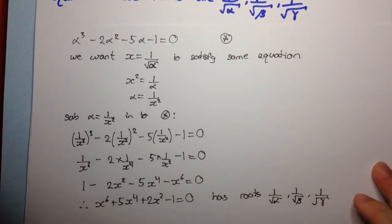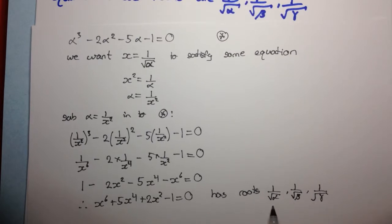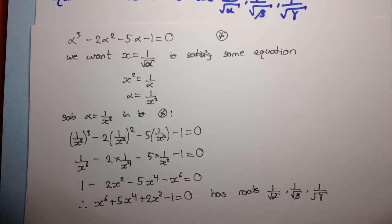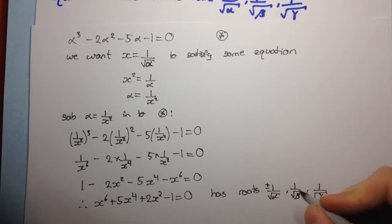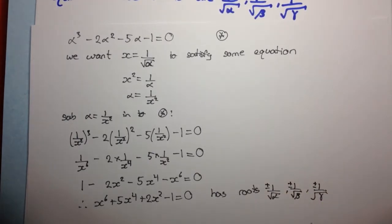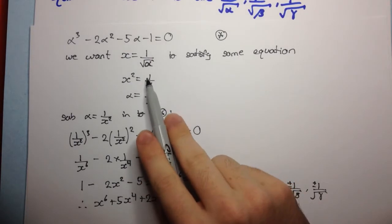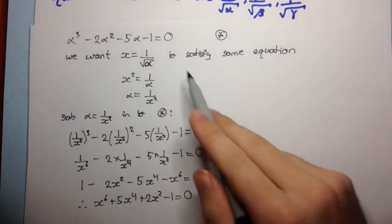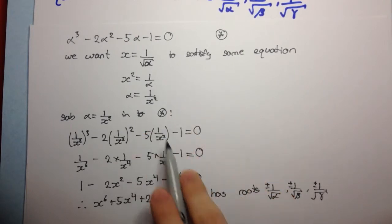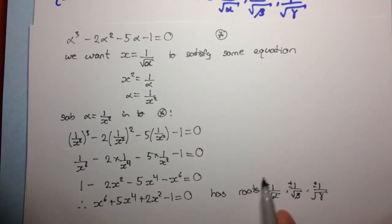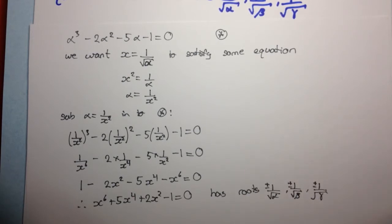Now, you might be thinking this has 3 roots here, but it's a power of 6, so we should be expecting it to have 6 different roots. Well, it actually does have 6 different roots, and they are plus or minus of these. The reason we get this plus or minus is because when we squared both sides, that considers the case where it's also negative. So if this was negative, we can still square it and get to this. That's why this actually has 6 different roots, which are plus or minus of these 3 other roots, which are the same in magnitude.